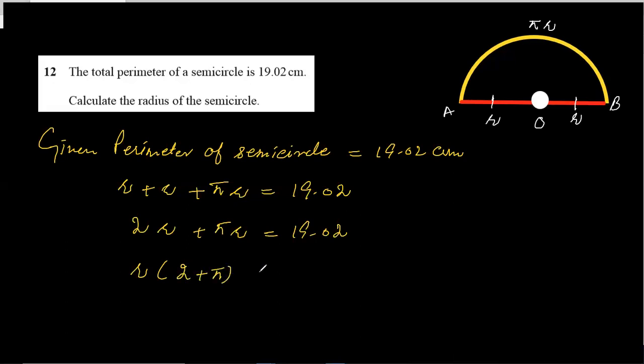r times (2 plus π) equals 19.02. So finally, r equals 19.02 over (2 plus π). Type it at one time in your calculator to get the exact answer. So in this way, r equals 3.7 centimeter.